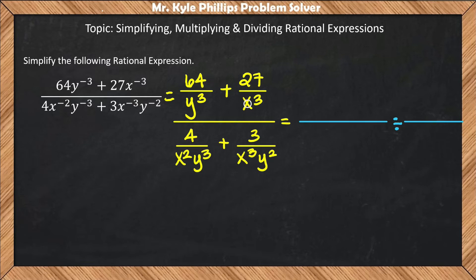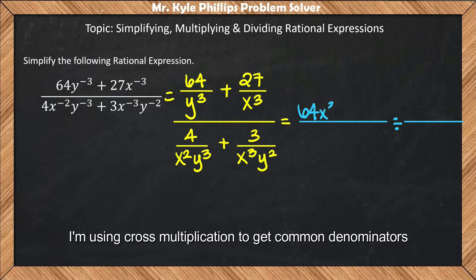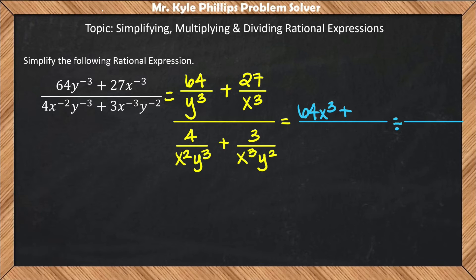To do this, I'll have 64 times x³. The sign in the middle never changes. Then y³ times 27. In the denominator, I'll multiply straight across: x³y³.